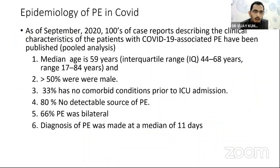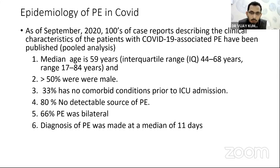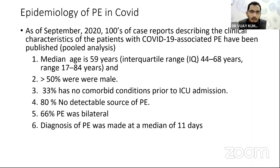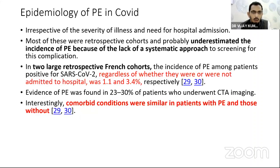Looking at the epidemiology, this pooled analysis of initial case reports reveals that the median age of presentation of pulmonary embolism is 59 years, and males are more prone. Thirty-three percent of these patients who had pulmonary embolism never had any comorbid conditions. Prior to ICU admission, 80 percent have no detectable source of PE — in other cases the commonest source is DVT, but in COVID-19 patients, 80 percent of the time there is no evidence of DVT. Most of the time it is bilateral, and the median onset of pulmonary embolism is day 11 of illness from the onset of symptoms.